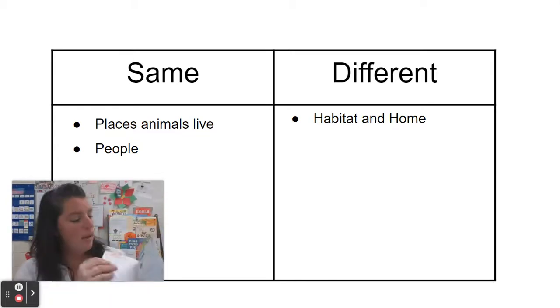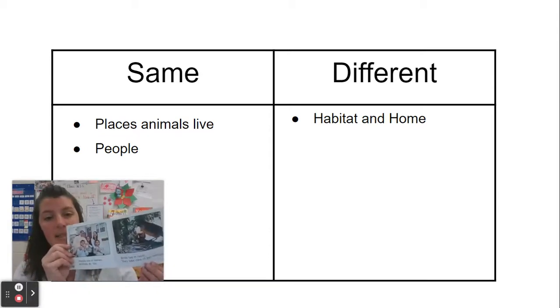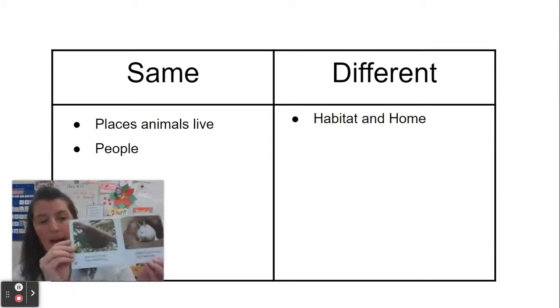So, they used the word home, like a house, a nest, hives. So, they used different words to describe where people or animals live.